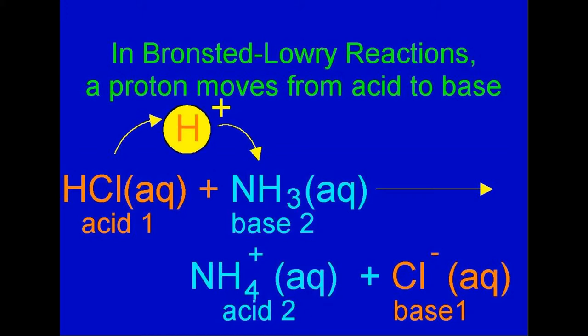In this case, because the reactants are so strong, the balance of the equilibrium is well forward. We end up with little hydrochloric acid and ammonia, and mostly ammonium and chloride ions.